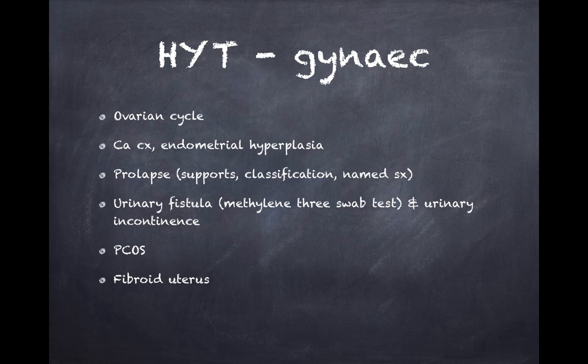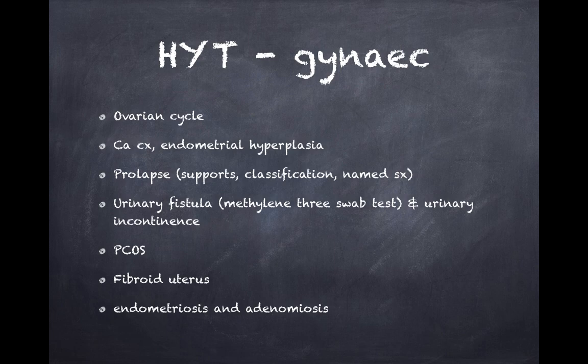Fibroid uterus: know the different types, risk factors for development, complications, and management — this is similar to your UG content. Endometriosis and adenomyosis: just cover the definitions, some clinical presentation images, and management aspects. PID — pelvic inflammatory disease: know the causative organism, the antibiotic and course of treatment, and the complications of PID.